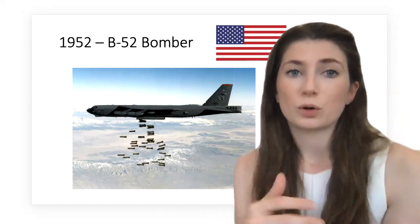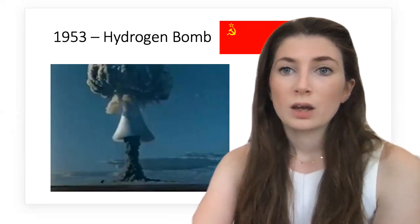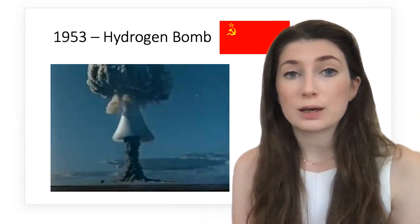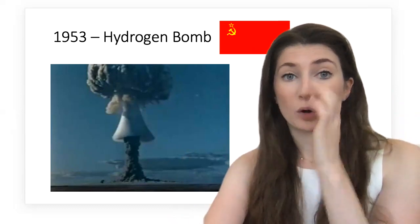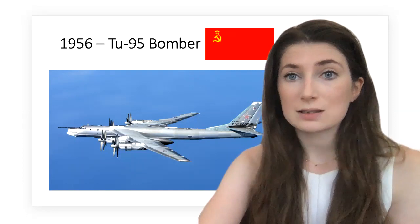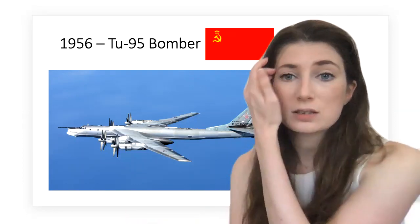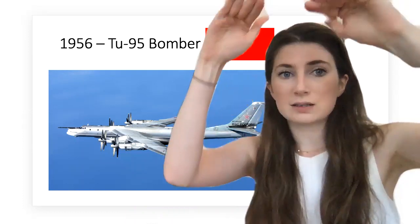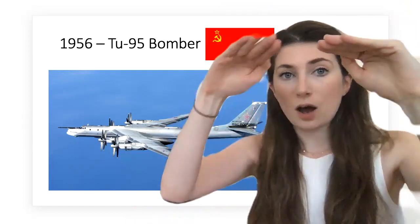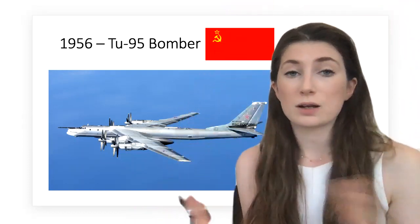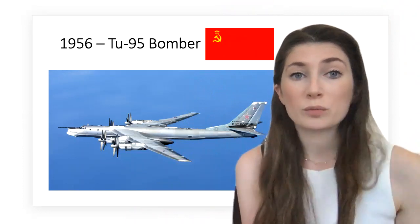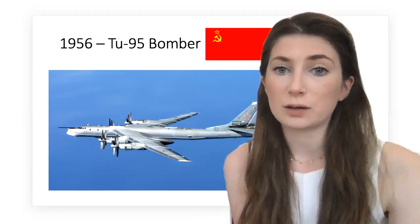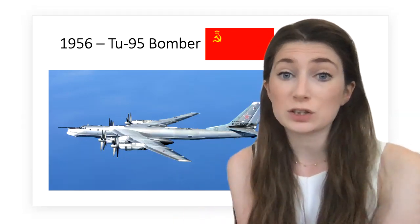At this point, the USSR did not have a hydrogen bomb or a bomber. One year later, in 1953, the USSR caught up and developed their own hydrogen bomb. They couldn't use it until they developed a long-range bomber, and it was three years later, in 1956, that they managed to do this — called the Tu-95. Now both sides were at the same point again. Both sides could cause the same amount of damage, and both could fly a plane and drop a highly powerful explosive bomb on each other.